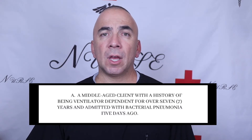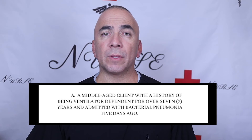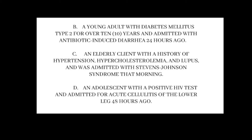The correct answer is A — the middle-aged patient with a history of being ventilator-dependent for over 7 years and admitted with bacterial pneumonia 5 days ago. The best candidate for discharge is one who had a chronic condition and is most familiar with their care. This patient is most likely stable and can continue medication therapy at home. Answer B is not ideal because the client with antibiotic-induced diarrhea still needs strict monitoring as blood sugar levels may become unstable and dehydration is still possible. In C, Stevens-Johnson syndrome is a rare, serious disorder of the skin and mucous membranes, usually a reaction to medication starting with flu-like symptoms followed by a painful rash or blisters. In D, cellulitis is often underestimated as a complication of HIV disease but is responsible for increased morbidity.